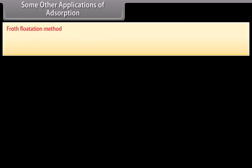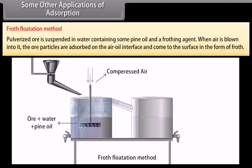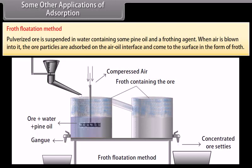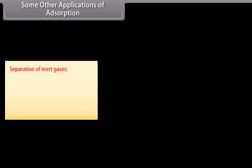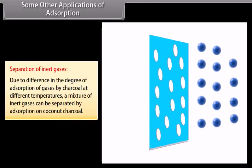Further applications of adsorption: in heterogeneous catalysis, adsorption of reactants on solid surfaces increases rate of reaction — for example, manufacture of ammonia, sulfuric acid, and hydrogenation of oils. Chromatographic separation uses adsorption to separate and identify components of mixtures, such as thin layer chromatography, paper chromatography, and gas-liquid chromatography. In the froth flotation method, pulverized ore is suspended in water with pine oil; when air is blown in, ore particles are adsorbed on the air-oil interface and come to the surface as froth — for example, sulfide ores. Inert gases can be separated by adsorption on coconut charcoal at different temperatures.